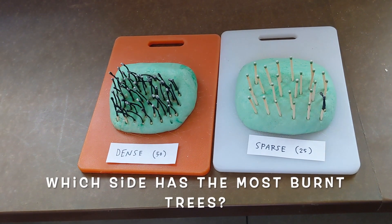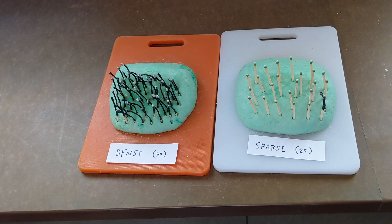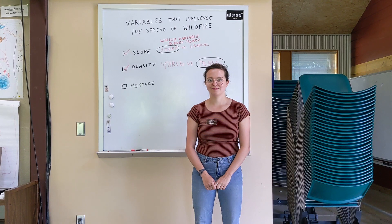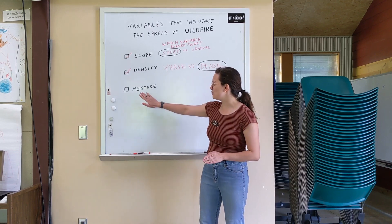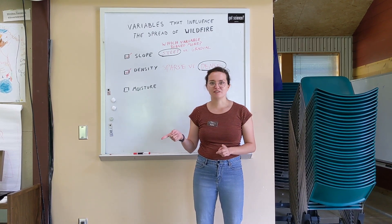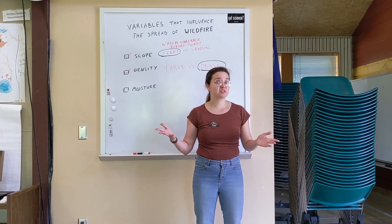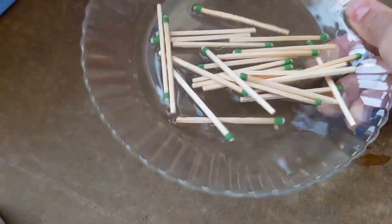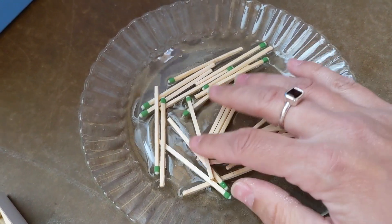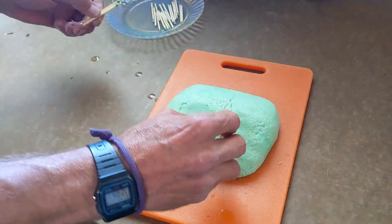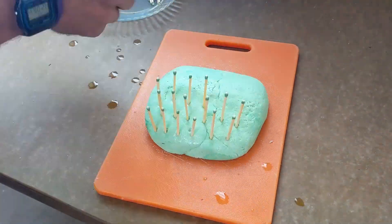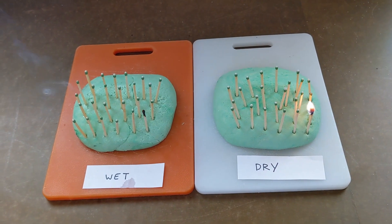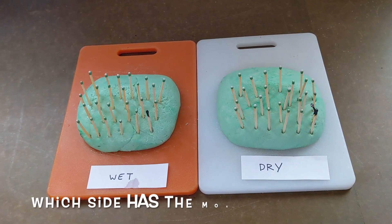Because we're testing forest density in this experiment, one of our models will have 25 trees and the other will have 50. Which side do you think has the most burnt trees? The last variable that we're going to test is moisture. Do wet forests burn faster than dry forests, or vice versa? Well, we're going to find out. For this experiment, we're going to have a wet forest and a dry forest — for the wet one, we're going to soak our trees in some water. Which side has the most burnt trees?